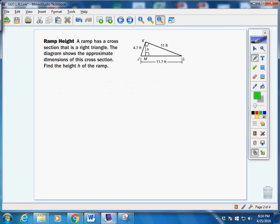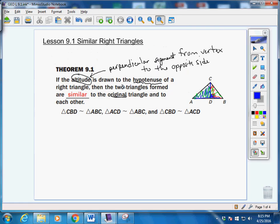Like in this example, a ramp has a cross section that is a right triangle. The diagram shows the approximate dimensions of this cross section. Find the height h of the ramp. So what we know is if we look, here's my right angle, I have a perpendicular line from that vertex to the hypotenuse. If we see that, that means we can use this theorem.